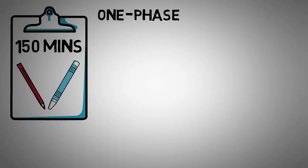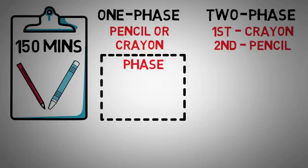So let's go over the technicals. The House Tree Person Test takes, on average, 150 minutes to complete. Therapists can choose between a one-phase test, where a pencil or crayon is used for each drawing, and a two-phase test that uses a crayon in the first phase and a pencil in the second.